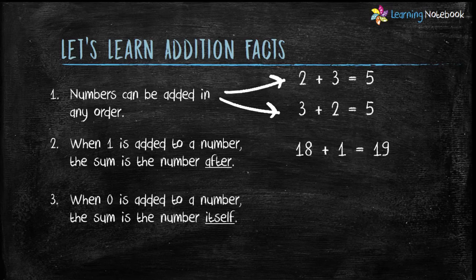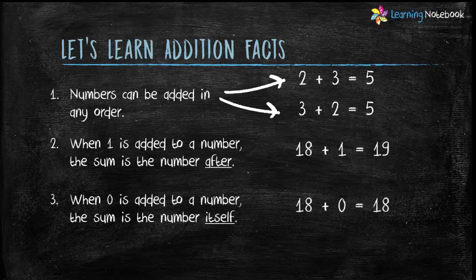The third fact is: when 0 is added to a number, the sum is the number itself. For example, when 0 is added to 18, the answer remains 18, because we are not adding anything to 18.